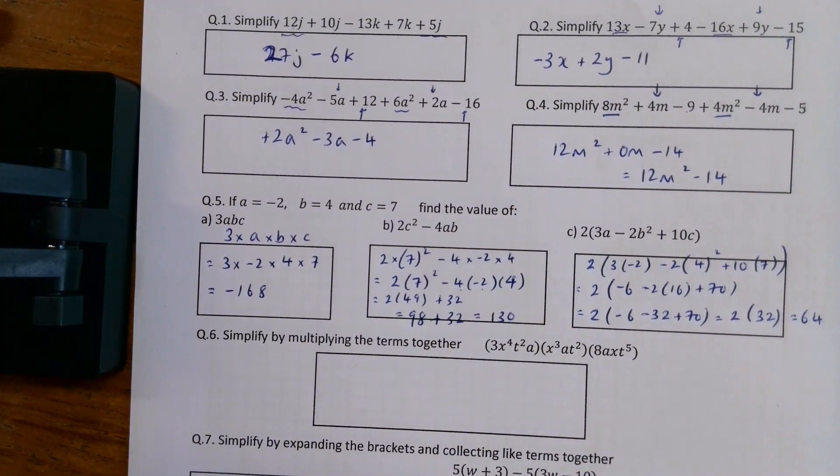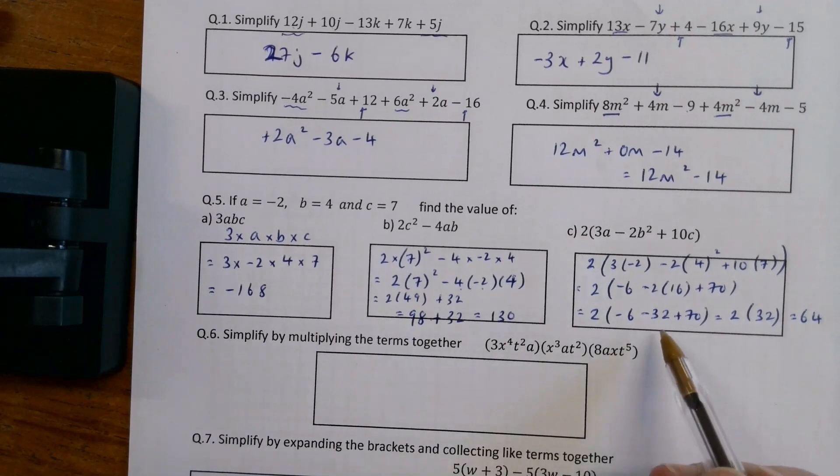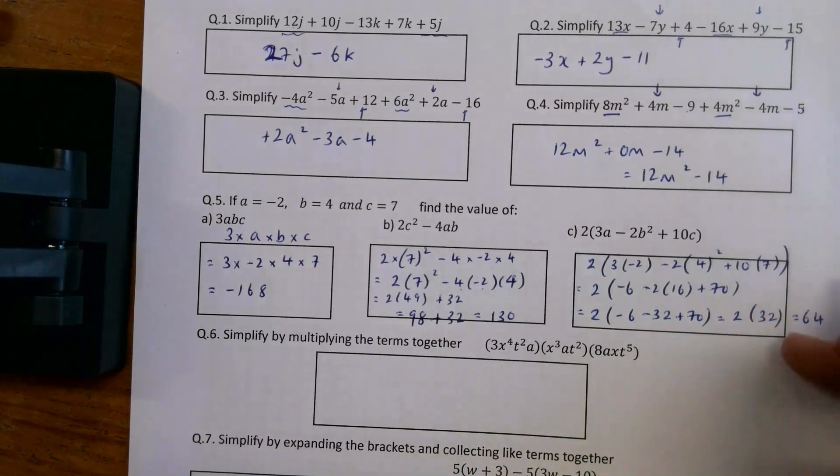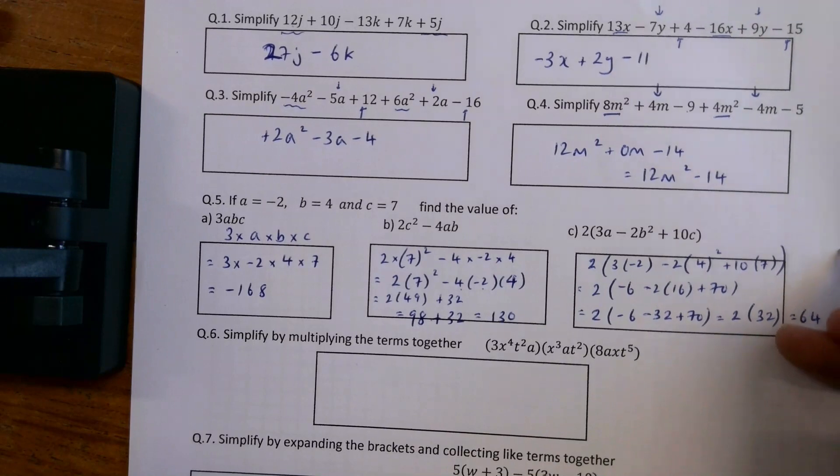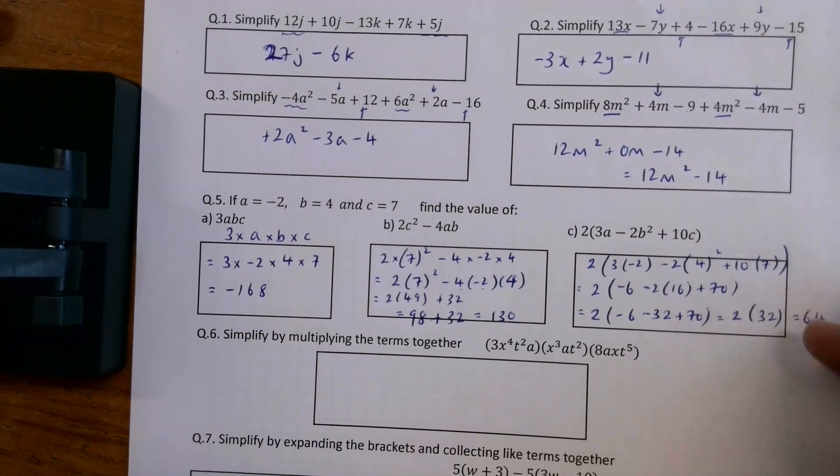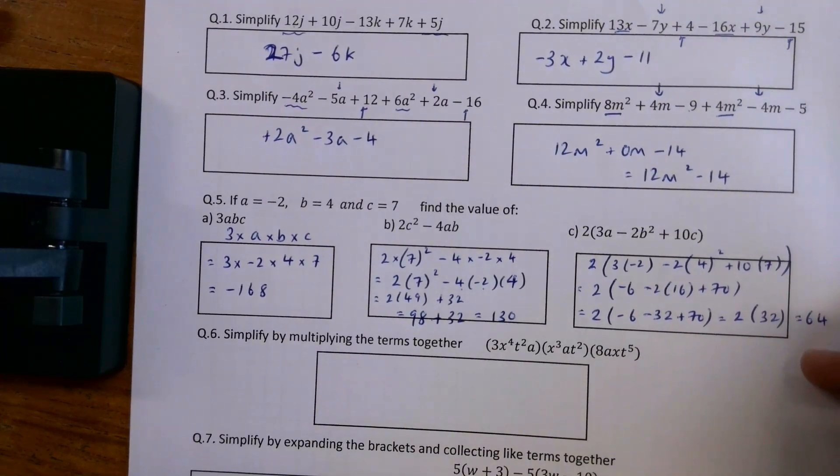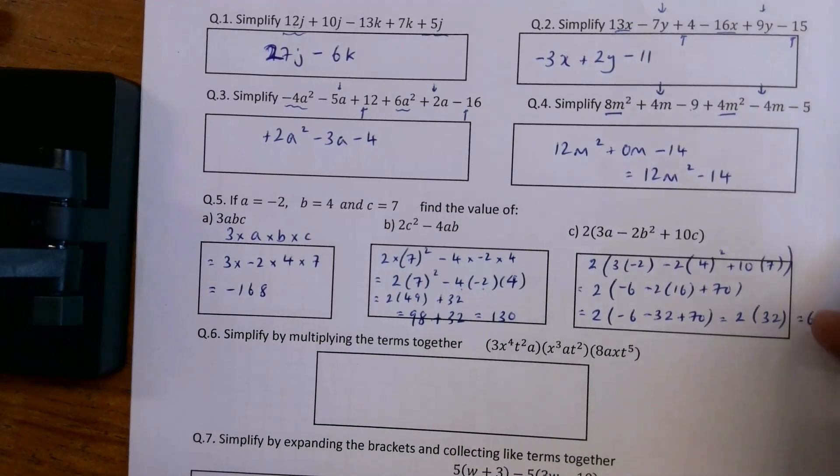Hopefully that's right. I'm sure you'll tell me if it's not. Let me just check that. So I've got minus 6, minus 32 is minus 38. 70 minus 38 is, yeah, 32.